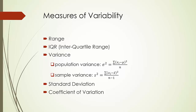Now let's turn our attention to measures of variability or dispersion. The simplest measure is range, which is given by the difference between the largest and the smallest values in the dataset. A weakness of using range to measure variability is that it is highly sensitive to extreme values. To overcome that, people sometimes use IQR, or interquartile range, to measure dispersion. IQR is the difference between the third and the first quartiles.